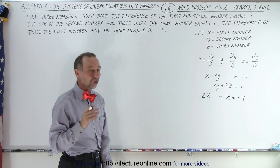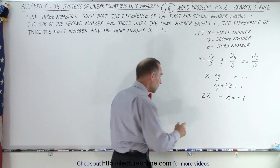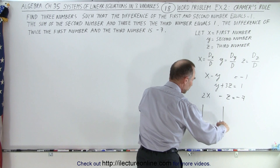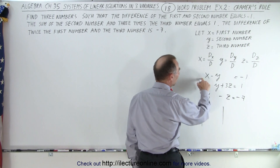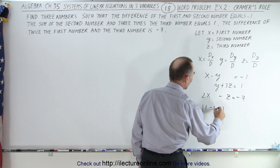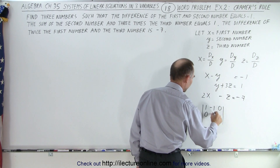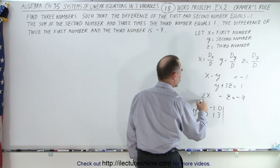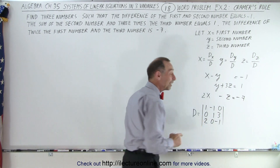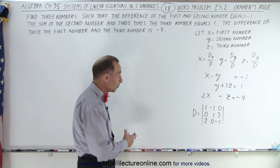First we need to find the determinant D. D looks like a matrix but with vertical lines, and we write down all the coefficients of x, y, and z from the three equations. So we have 1, negative 1, 0 in the first row; 0, 1, 3 in the second row; and 2, 0, negative 1 in the third row. Notice the three zeros make it easier to evaluate using Cramer's rule.